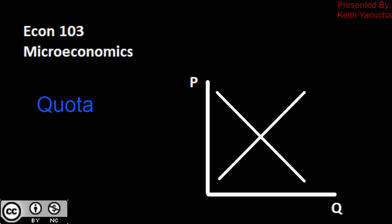Welcome back to Econ 103, Introduction to Microeconomics. In this video, we're going to do a walkthrough of a quota. That is the case where our producers are able to form an alliance, either legally — the government has given them the right to do so, typically through self-regulation — in order to limit their production and push up the price.